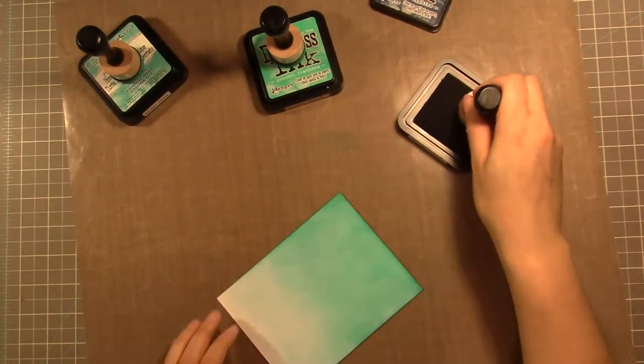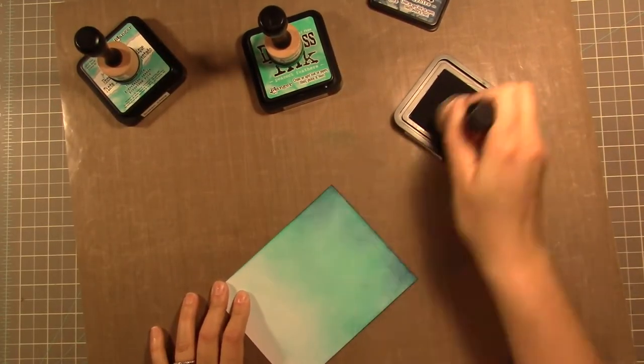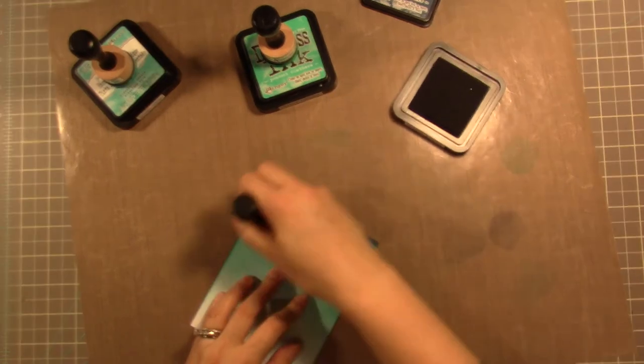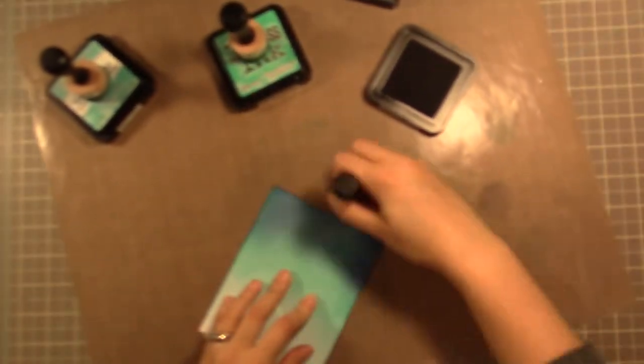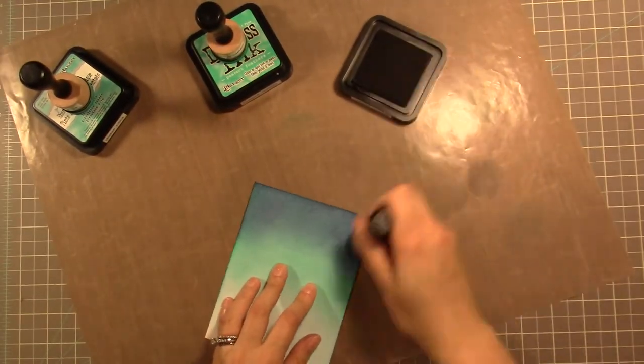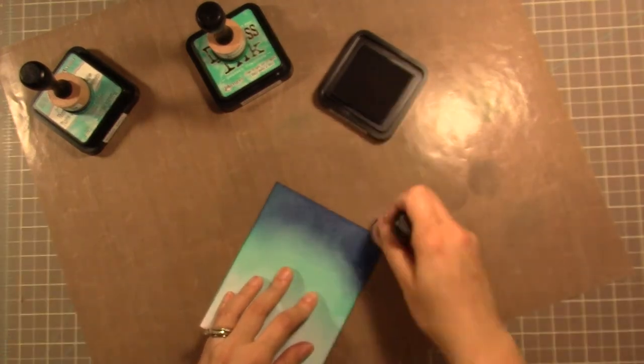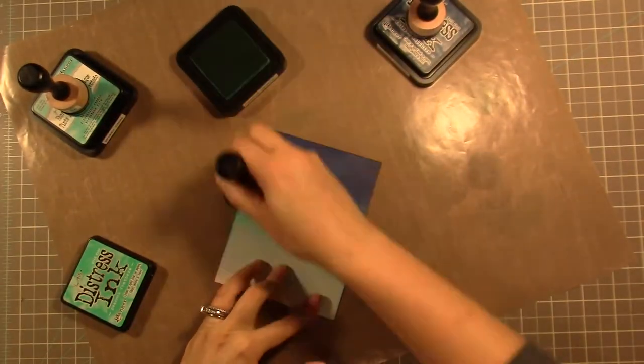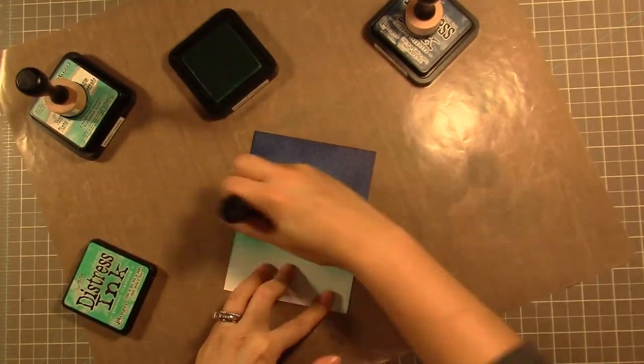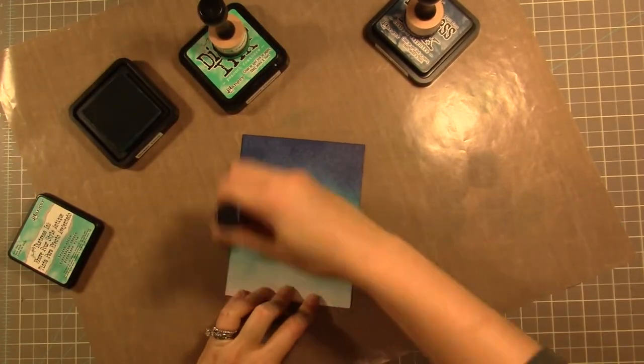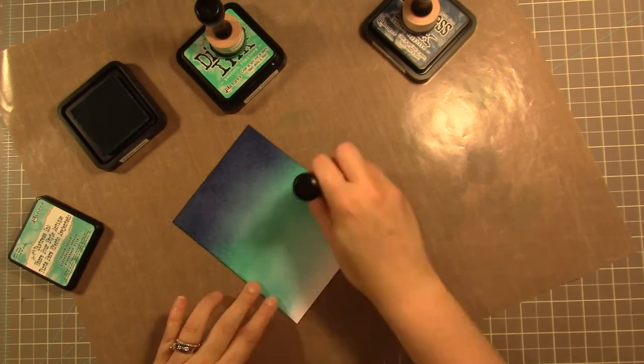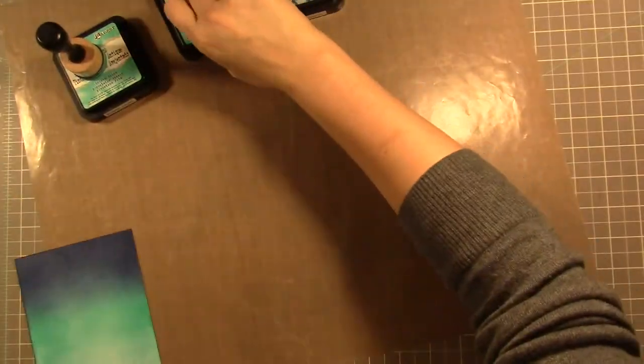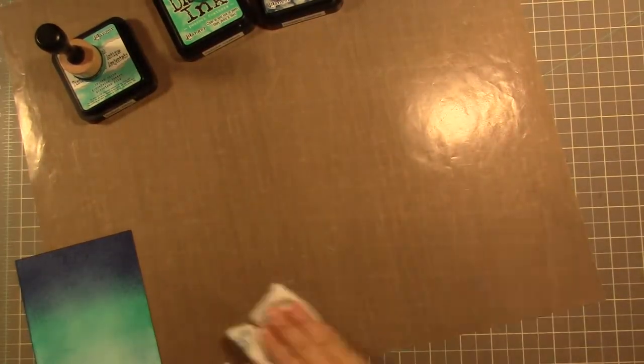Over top of that I'm using Chipped Sapphire with the blending tool. Sometimes I get a little bit of splotchiness from the sponge but not very often. My camera had a really tough time focusing because I was just blending like a mad woman. I also have this on super sped up so that you guys didn't have to watch it because it took me a little while, but I love how it turned out.